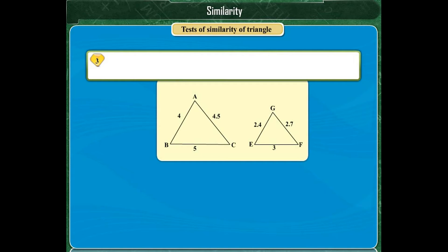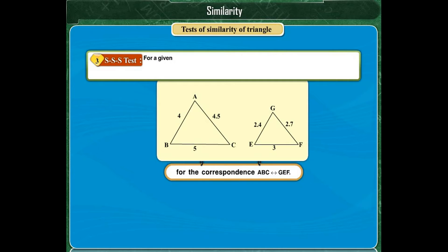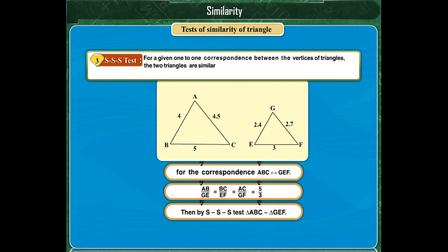The second test is SAS test. For a given one-to-one correspondence between the vertices of triangles, the two triangles are similar if two sides of one triangle are proportional to the corresponding sides of the other triangle and the angles included by them are congruent. The third test is SSS test. For a given one-to-one correspondence between the vertices of triangles, the two triangles are similar if three sides of one triangle are proportional to the three corresponding sides of the other triangle.